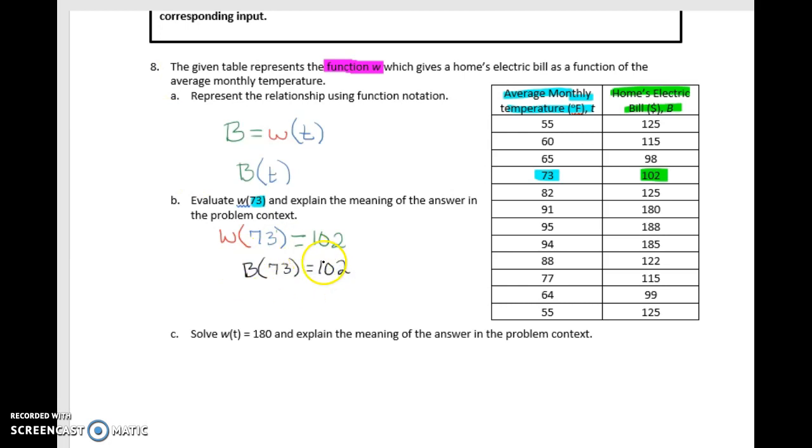Or if you don't want to use function notation, we can also say that B, which is the electric bill's cost, is $102. And so here we have to label it because it's no longer in function notation. When it's in function notation, we have defined variables. Here we're not quite sure what B is, so we have to make sure that we label it.